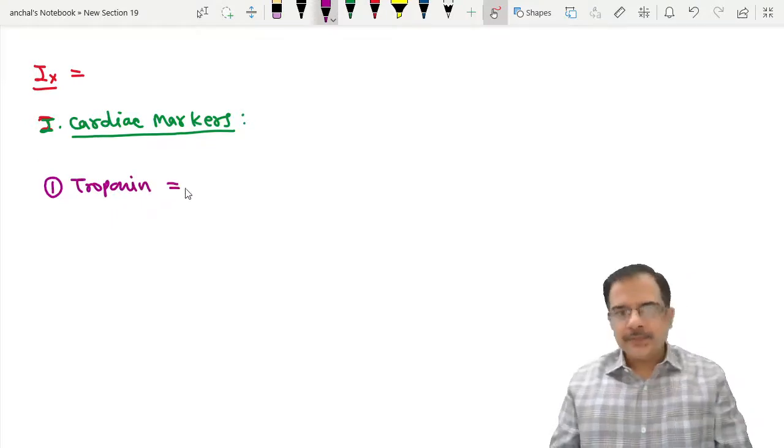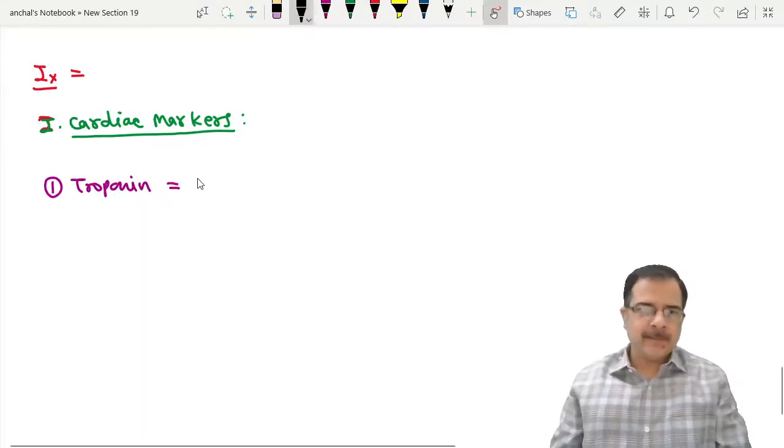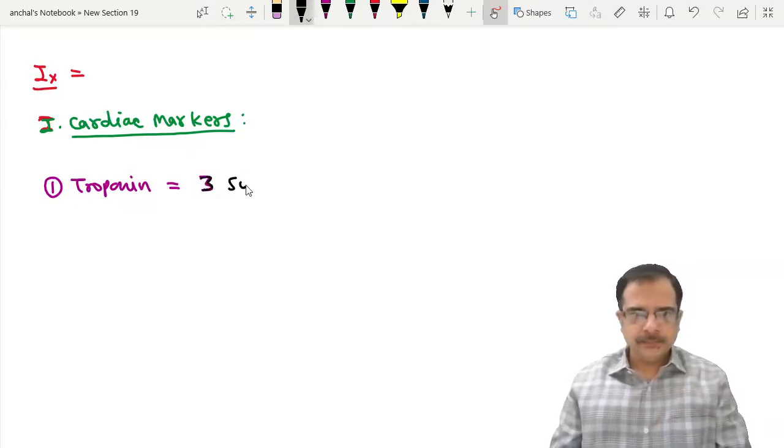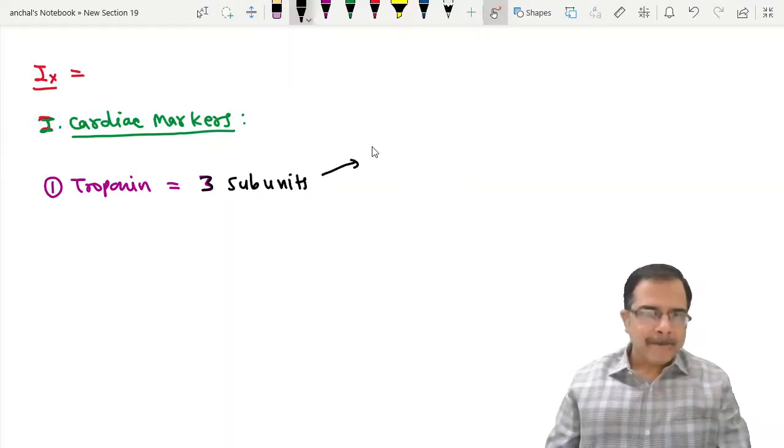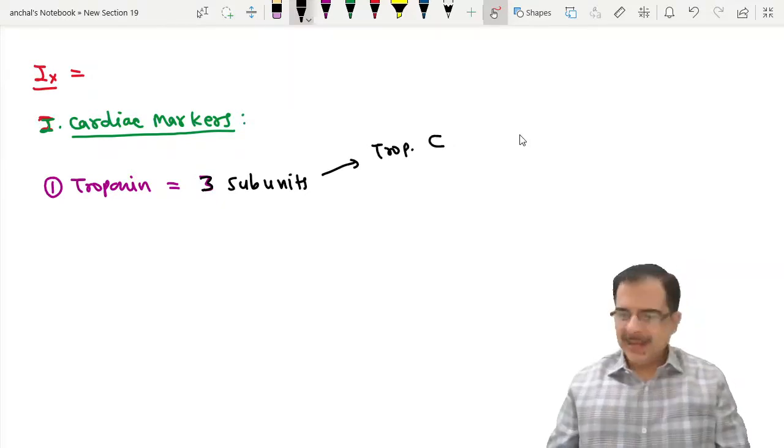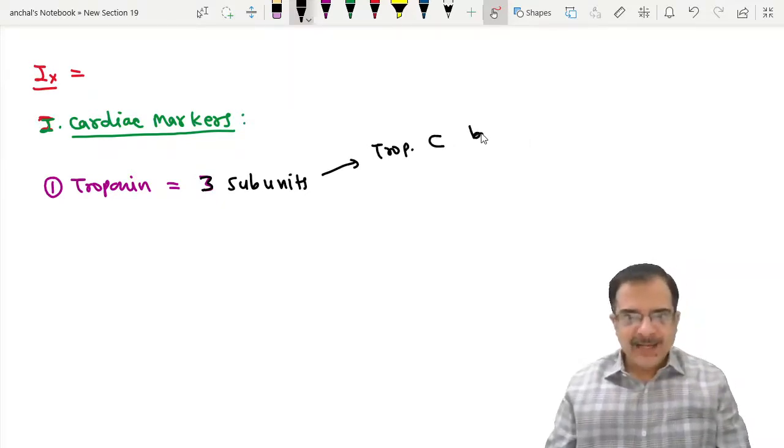Troponin has three subunits. Troponin C, as the name suggests, binds with calcium.